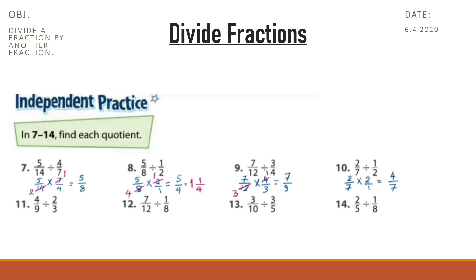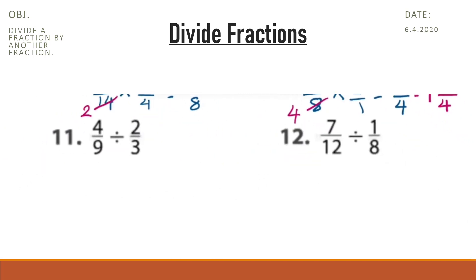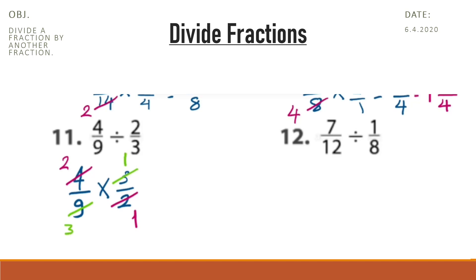Welcome back. In question number 11, 4 ninths multiplied by the reciprocal of 2 thirds is 3 over 2. We can simplify: divide by 2 — it will be 2; divide by 2 — it will be 1. Also, simplify 3 and 9: divide by 3 — it will be 3; and 3 divided by 3 is 1. So, 2 multiplied by 1 is 2 and 3 multiplied by 1 is 3. The simplest form is 2 thirds.